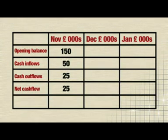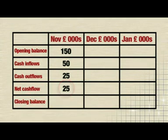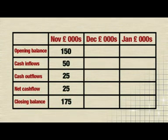The last thing to work out is the closing balance. To do this, you add the opening balance and the net cash flow. Here, it's £150,000 plus £25,000. The closing balance of £175,000 then becomes the opening balance for the next month, like this.